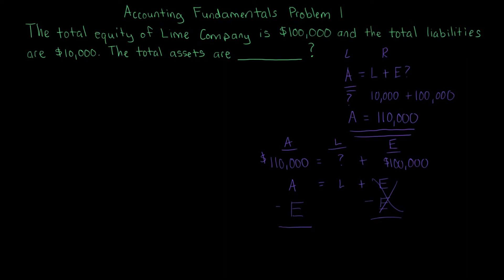So the idea is that liabilities equal assets minus equity. So if we know assets are $110,000 and equity is $100,000, that means the liabilities have to equal $10,000. So that's the idea here—you can solve for any variable.